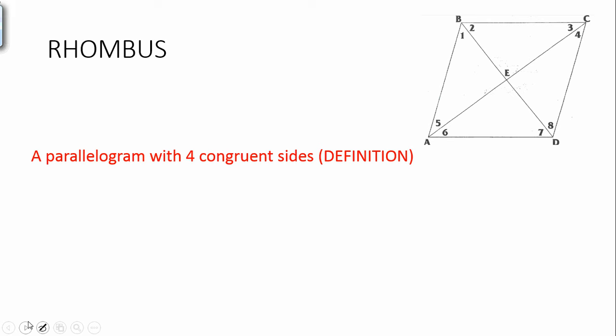Diagonals bisected. All of those parallelogram things still hold true, but it's a little bit more special than that because he now has four congruent sides. It's called a rhombus.